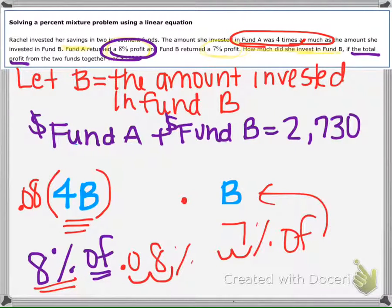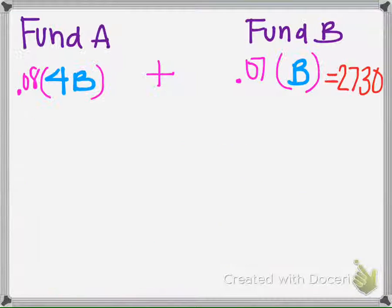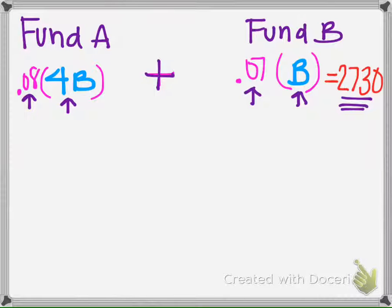And in Fund B she's going to earn 7% of that amount, so we move the decimal over two to get 0.07. Our equation looks like this: this is the amount and this is the percent she'll earn from each account, and all together this is how much she's going to earn.